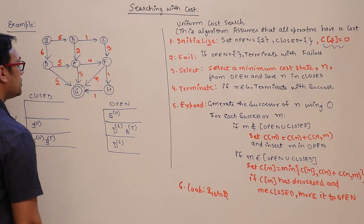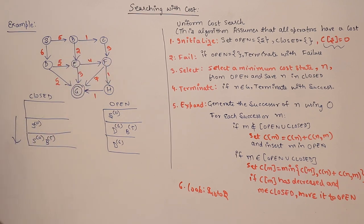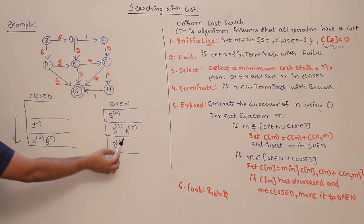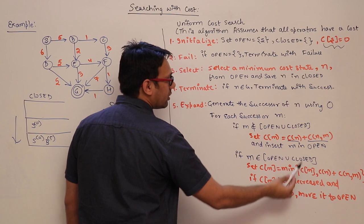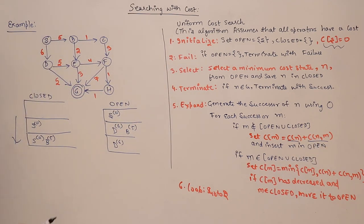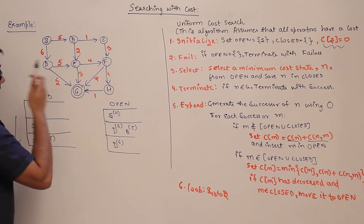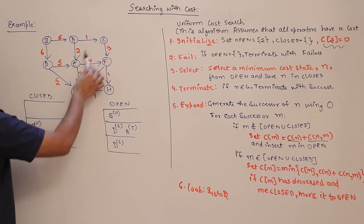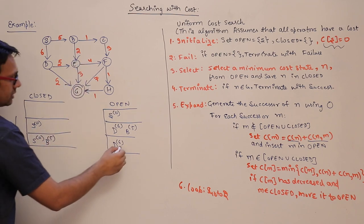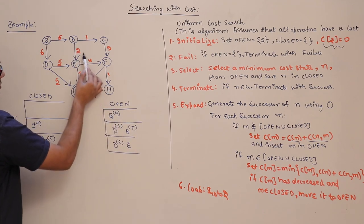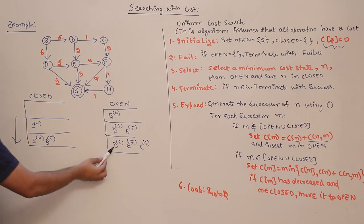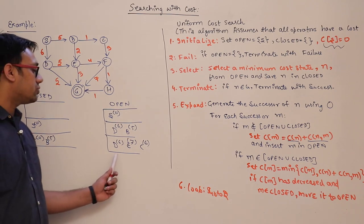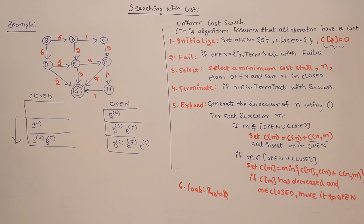The successors of B are E and C, neither of which is present in open or closed. We insert both into open. The cost of C is 5 + 1 = 6, since the cost to reach B is 5 and we add the edge cost from B to C. The cost of E is 5 + 2 = 7. Now D and C both have cost 6, so we can choose either one.